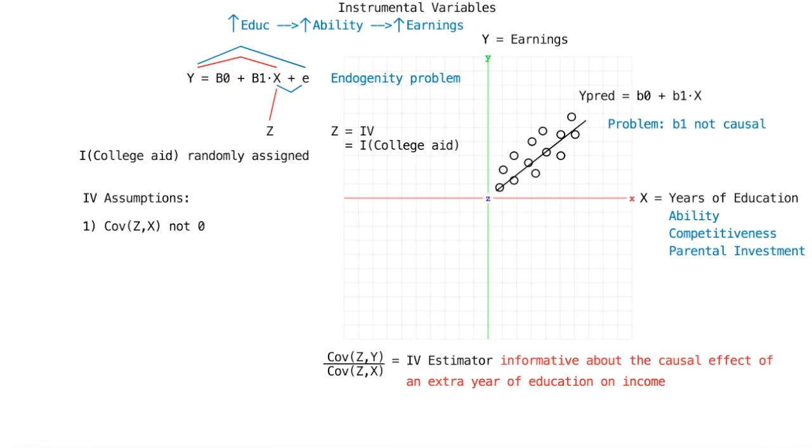As mentioned before, we need z to affect y only through its effect on x. In our context we don't expect college aid to directly affect earnings as employers are likely not going to care about whether a person received college aid in high school or not. Although we can't test this assumption directly, it likely holds for our example as well.